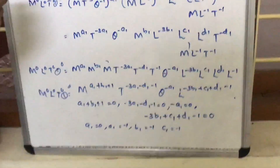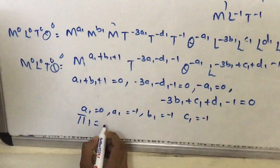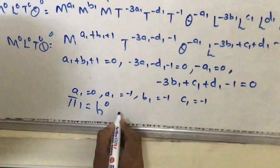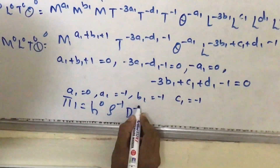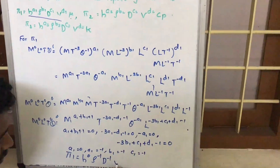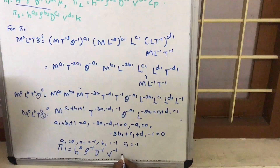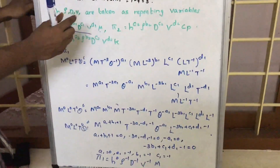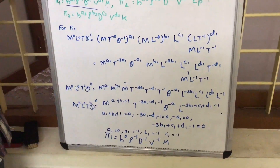Now, rewriting pi 1 with the obtained values: pi 1 equals H raised to A1 — A1 is 0 — times rho raised to B1, where B1 is minus 1, times D raised to C1, where C1 is minus 1, times V raised to D1, where D1 is minus 1, times mu. Substituting all respective values, we are able to write this pi 1 term.